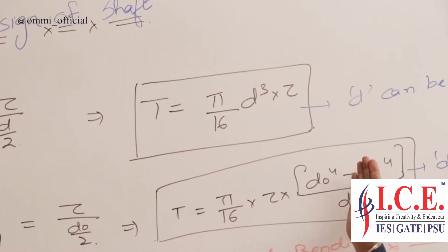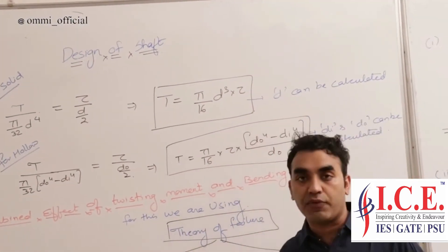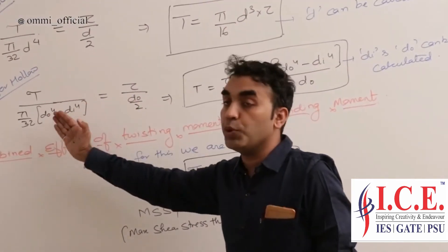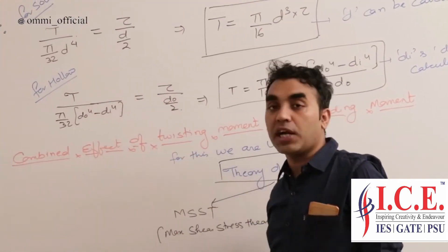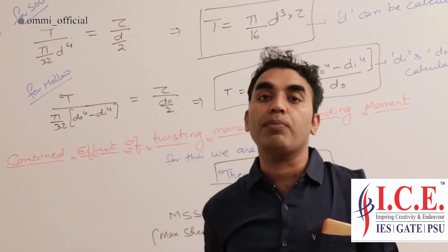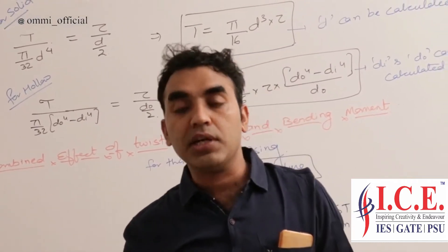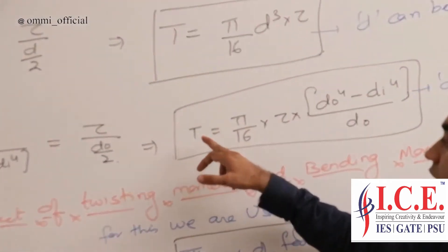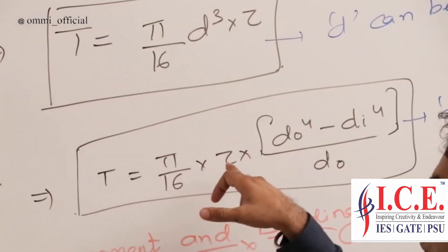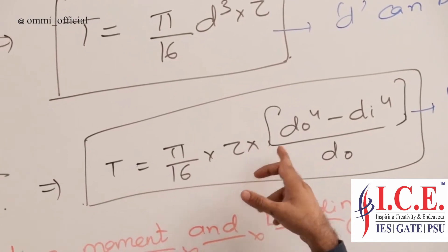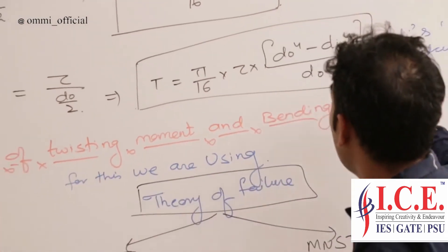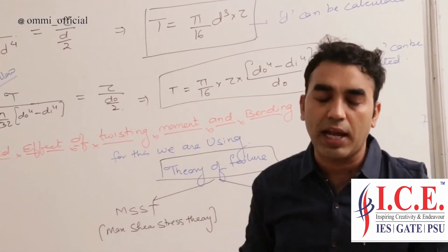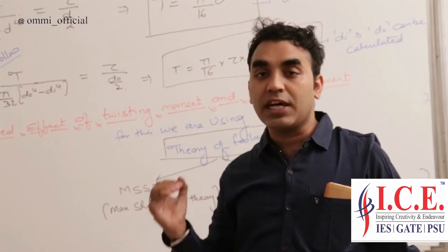From the solid equation, we can calculate the diameter d of the shaft. For the hollow shaft, the formula changes: T equals pi by 32 times (d_o^4 minus d_i^4), where d_o is your outer diameter and d_i is your inner diameter. Simplifying, T equals pi by 16 times tau times (d_o^4 minus d_i^4) divided by d_o. From this equation we calculate d_i and d_o.